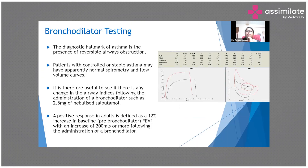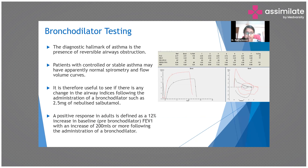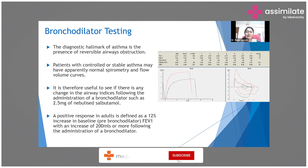We also have something called bronchodilator testing, which is used for the diagnosis of asthma. We look for reversible airway obstruction — basically, if a patient shows an obstructive pattern on spirometry, you give them a bronchodilator challenge and look for the response.